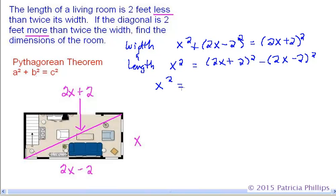x squared equals, do you remember how to multiply, how to square a binomial? The shortcut way. So the first binomial is going to be 4x plus 8x plus 4. We're going to put this in parentheses. Move the subtraction sign down. And the second binomial after we square it is going to be 4x minus 8x plus 4.